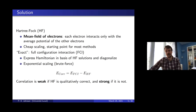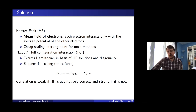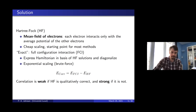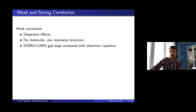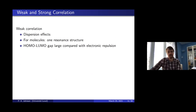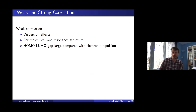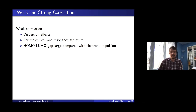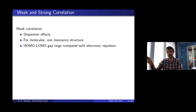That is probably the most controversial thing I'll say today — the breaking of correlation into weak and strong. The viewpoint we take is that if Hartree-Fock is a reasonable first approximation, then correlation is weak. A lot of effects in chemistry fall into the weak correlation regime: dispersion, systems with one dominant resonance structure, or situations where the HOMO-LUMO gap is large compared with the inter-electronic repulsion.